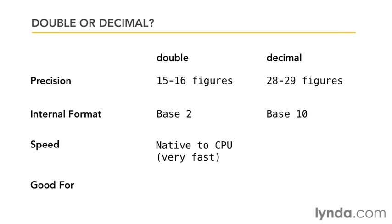Decimals, on the other hand, because they work in base 10 and have to be converted to and from the native processor format, can be up to 10 times slower than using doubles. So what are they good for? Well, scientific calculations can usually be executed quite accurately and quite fast using doubles. So they're good for scientific calculations,